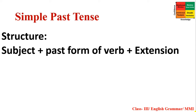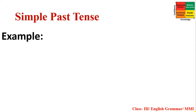For Simple Present Tense, the structure was subject plus present form of verb plus extension. For Simple Past Tense, the structure is subject plus past form of verb plus extension. The difference is in the use of the verb: in Simple Present Tense we use the present form or base form, and for Simple Past Tense we use the past form. Let's see some examples.